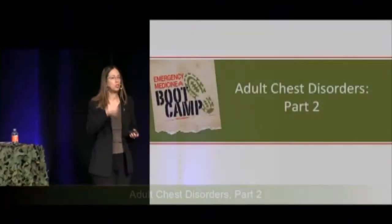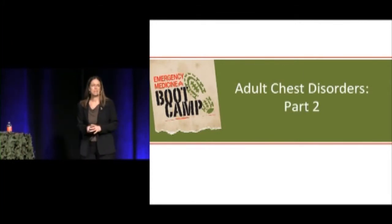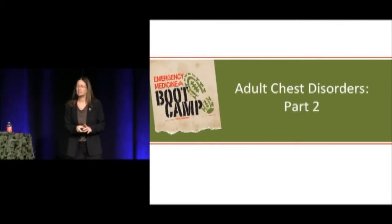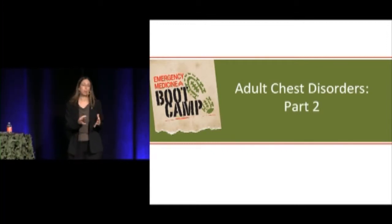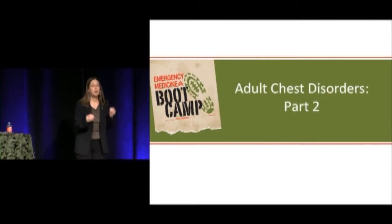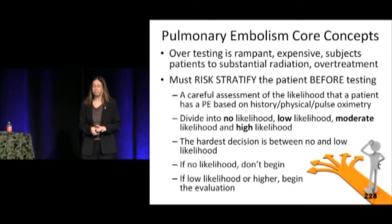We are going to talk about adult chest disorders part two. Yesterday we talked about pneumonia and chronic bronchitis, acute bronchitis, that sort of thing. You'll hear about asthma and COPD next to round out the pulmonary stuff. But this really is one of the more difficult topics we deal with in the emergency department, which is pulmonary embolism.